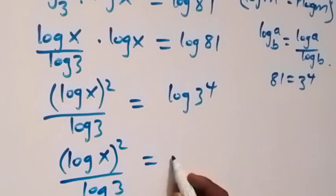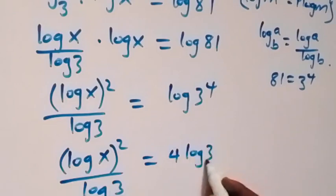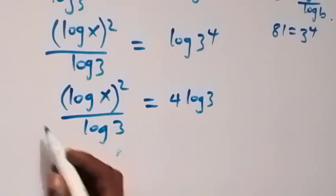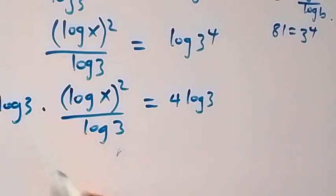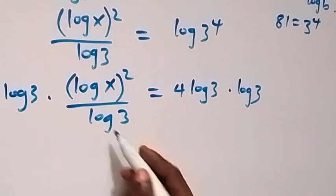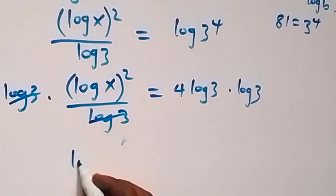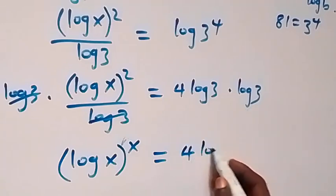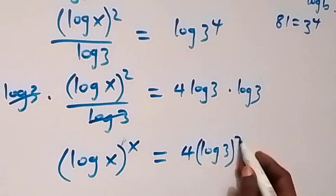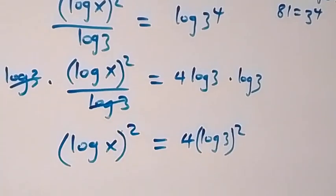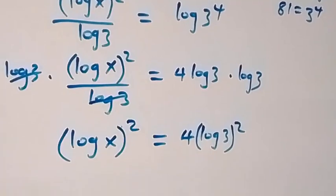So we have (log x)^2 over log 3 equals 4 log 3 on this side. To remove the log 3 in the denominator, we multiply both sides by log 3. The log 3 terms cancel, and we are left with (log x)^2 equals 4 log 3 times log 3, which gives us 4(log 3)^2.